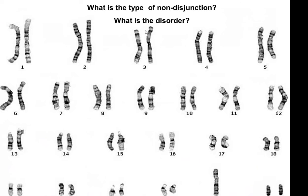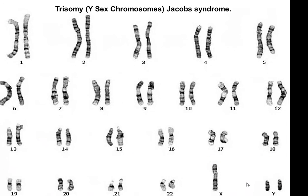The autosomes look fine. What's going on here? That is a trisomy of the Y chromosome, and it's called Jacob's syndrome.